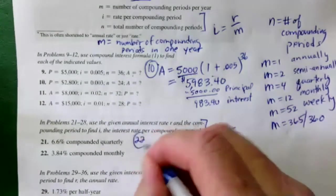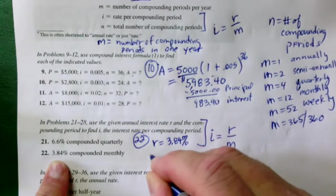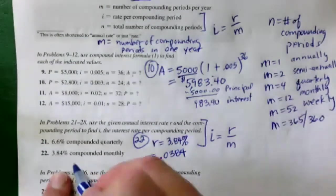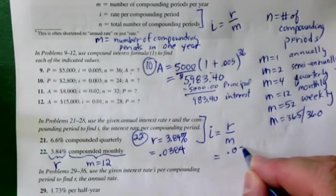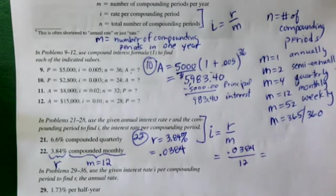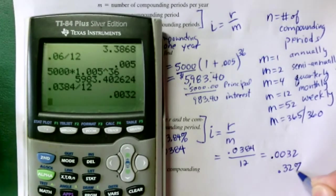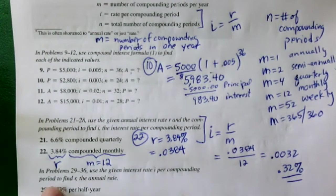For exercise 22, R is the nominal rate and we always enter decimals in formulas. Compounded monthly means M equals 12. So take the decimal form of the interest rate divided by 12 — that gives I to plug into the formula. If you wanted to find R from a given I and M, you just multiply both sides by M. For example, if you charge 1.73% per half-year, double it to find the annual rate.